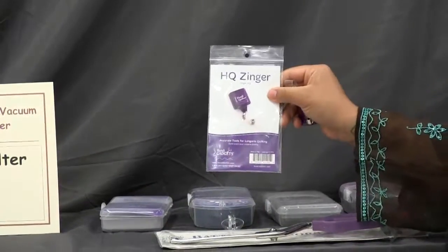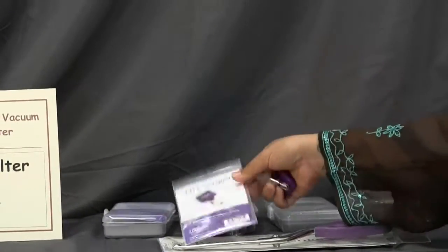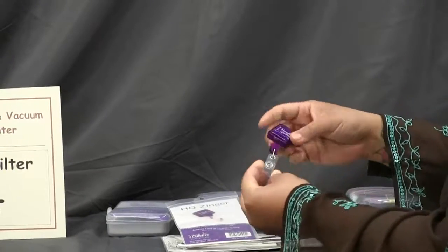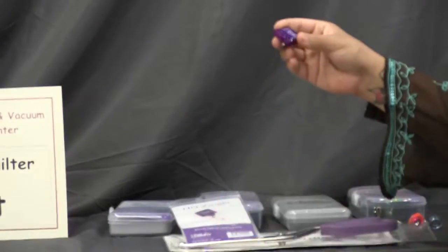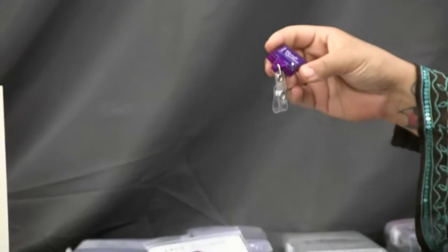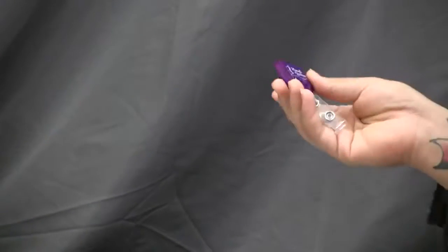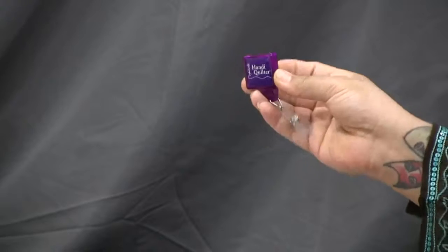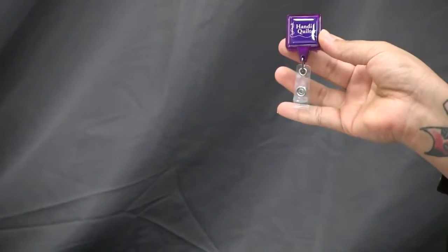I have these all the time. These are the HQ Zingers. Your scissors attach right on the edge there and then they pull out and they're always on you. I always forget where I put my scissors, so these just clip right to you and you can't lose your scissors anymore because they're attached.